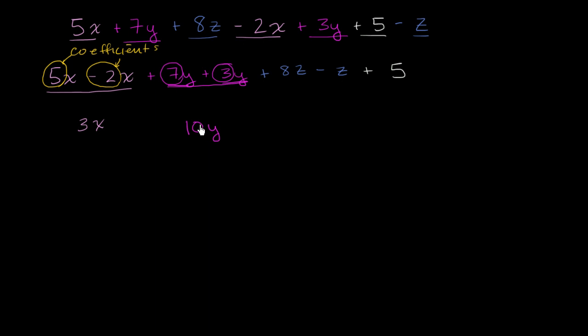But I really want to emphasize the intuition here. It's much more if you've got 7 of something, you add another 3 of that something, you've got 10 of that something. Now let's look at the z's. If I've got 8 of something and I take away one of them, I'm going to have 7 of that something. So that is 7z.